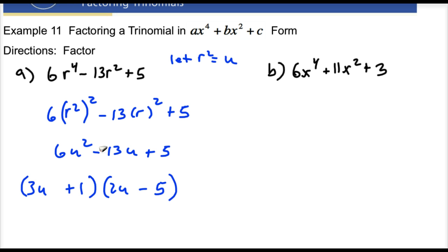So that would be the answer of that. Okay, so the factor form of this is 3u plus 1 times 2u minus 5. But now we want to replace all the u's with r squared. So now this is actually 3 times r squared plus 1, and then 2r squared minus 5. And it looks like that's it then, and that would be the answer.